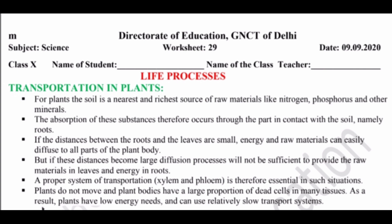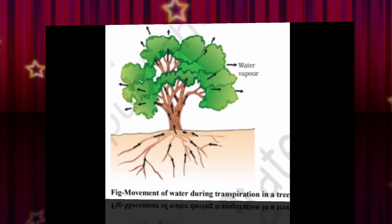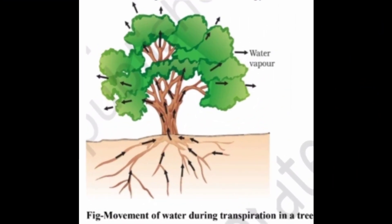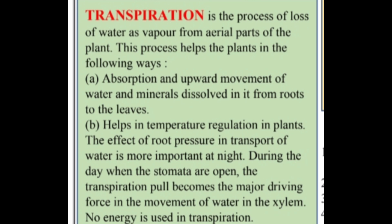You can see the movement of water during transpiration in a tree. Water moves from roots to stems to leaves, and is then removed in the form of water vapor through stomata. This is called transpiration. In simple words, removal of water vapor through stomata is called transpiration. Transpiration is the process of loss of water as vapor from the aerial parts of the plant.